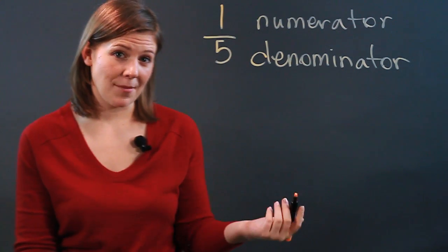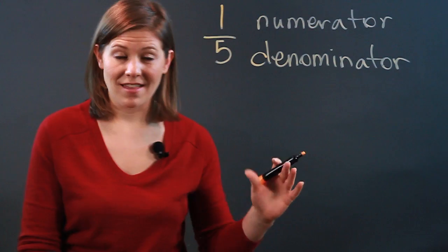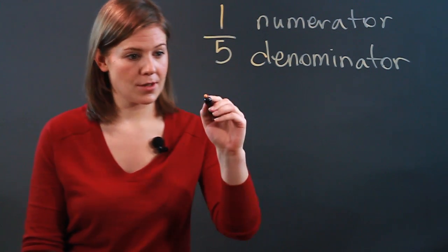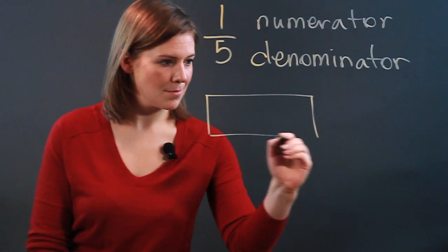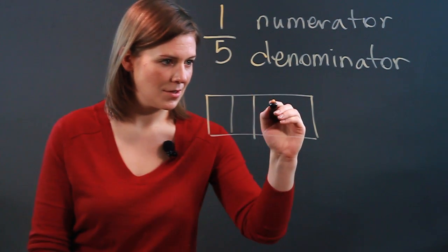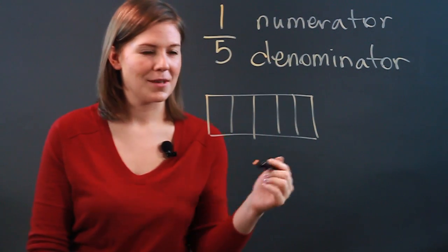Now, how do you determine the denominator when you're looking at something that you're creating as a fraction? So if we were to have a candy bar, and it were divided into one, two, three, four, five pieces,